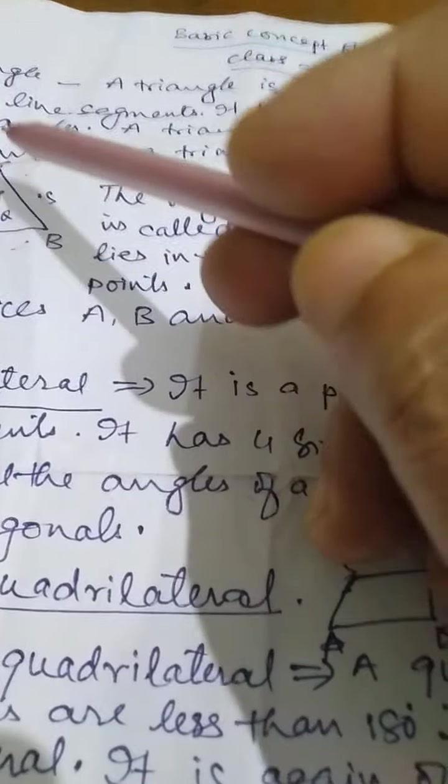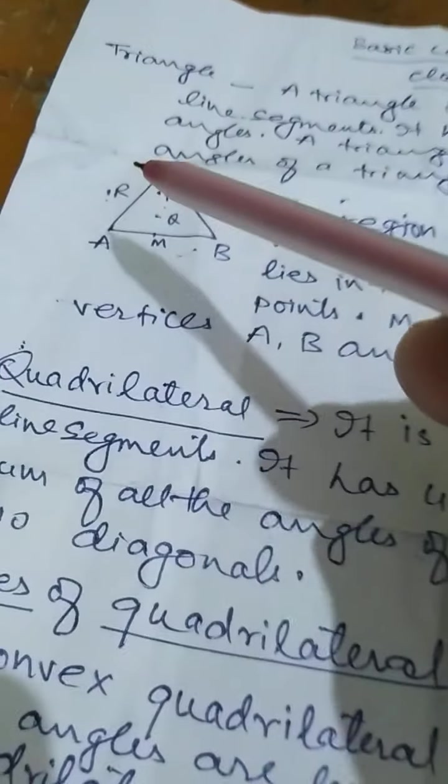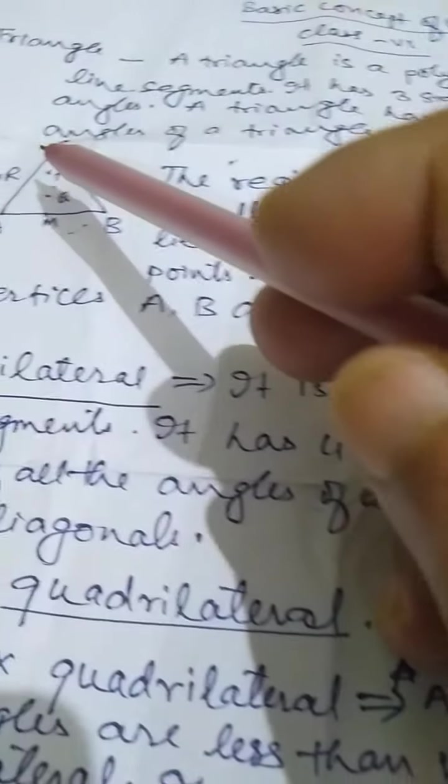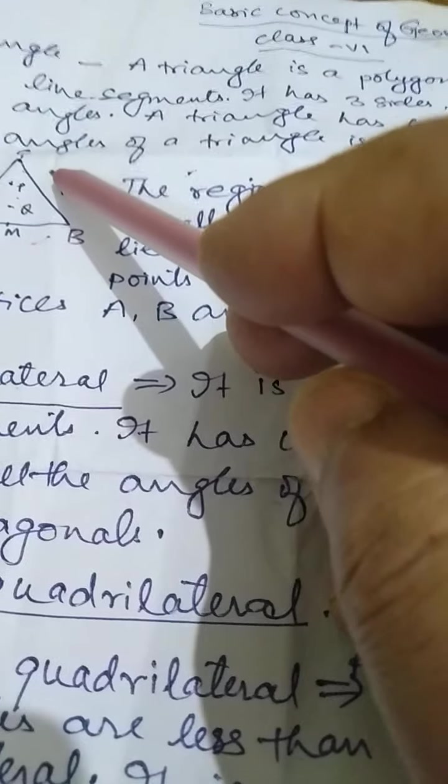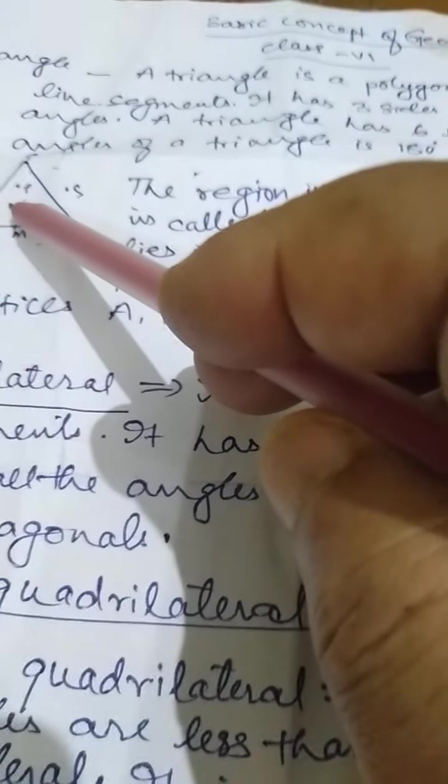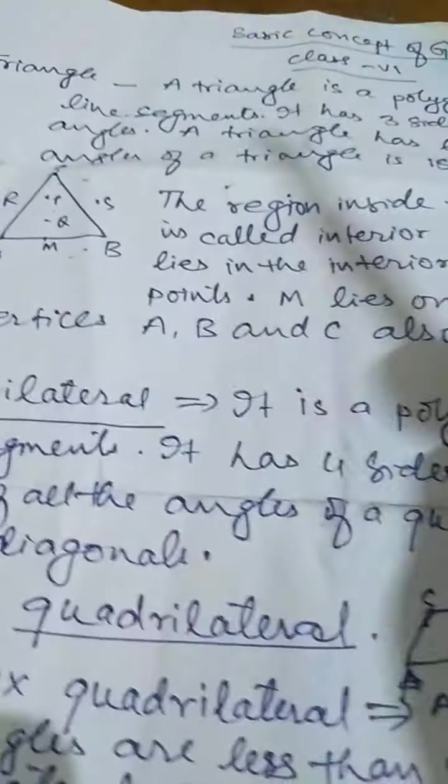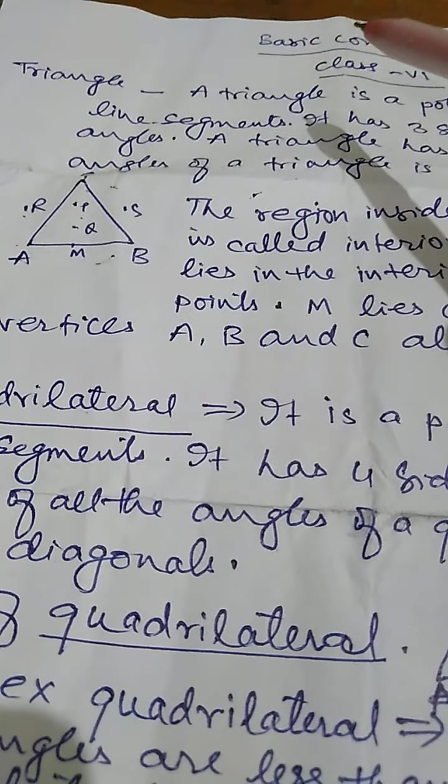Point M, A, B, C, the vertices of the triangle, these are on the triangle. So, the points outside are called exterior and point inside are called interior. And the points on the line are called on the triangle.